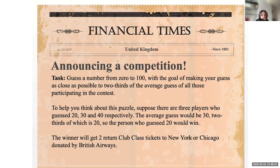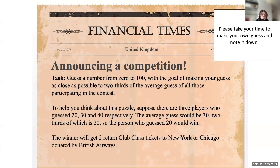The goal is to make your guess as close as possible to two-thirds of the average guess of all participants in the contest. To help you think about this puzzle: suppose three players guessed 20, 30, and 40. The average would be 30, and two-thirds of that is 20 — so the person who guesses 20 would win. I'd like you to take a minute to think about how you would approach this task and note down your guess.